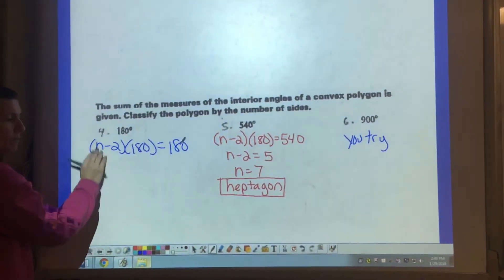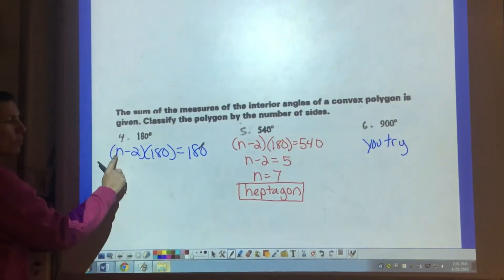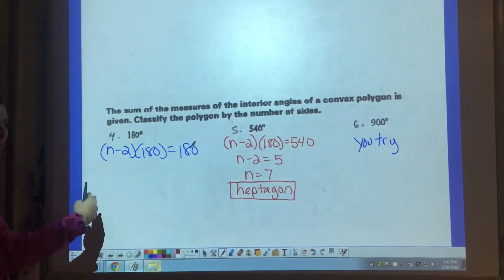So when you find out the answer to this formula, we know that the answer is 180. So we're going to figure out how many sides it has. I'm going to work backwards.